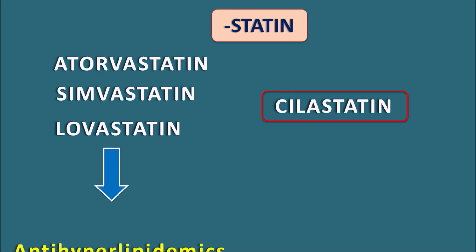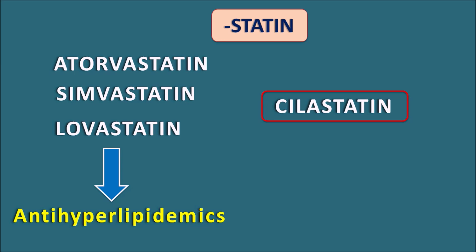Atorvastatin, simvastatin, and lovastatin are used as anti-hyperlipidemics — they inhibit HMG-CoA reductase enzyme, thereby decreasing LDL cholesterol. On the other hand, cilastatin is a renal dehydropeptidase enzyme inhibitor and inhibits the metabolism of the beta-lactam antibiotic imipenem, so it is combined with imipenem to increase its bioavailability. If we observe carefully, the first three drugs have the suffix '-vastatin' (HMG-CoA reductase inhibitors), while cilastatin has only '-statin', making it a renal dehydropeptidase inhibitor.